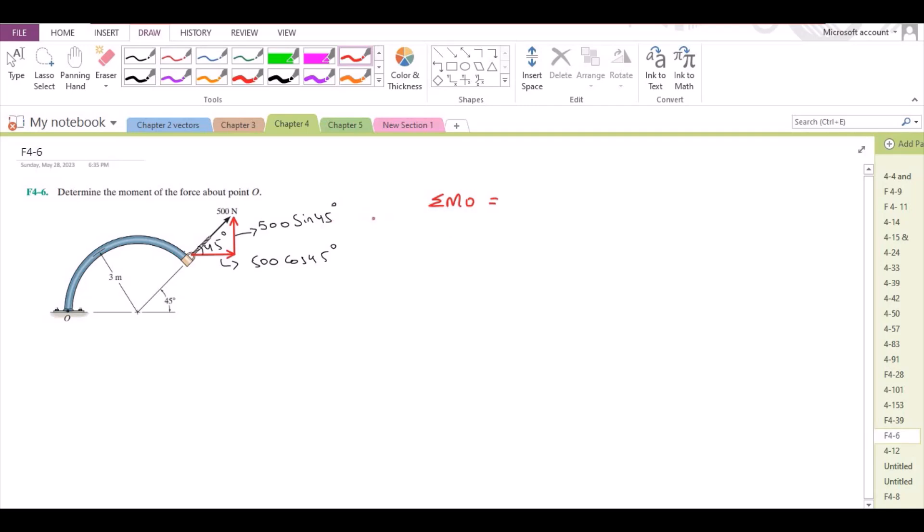Let us begin with the vertical force component. I can draw its projection right here. This is also 500sin45. This vertical force component is trying to rotate the assembly in counterclockwise direction above point O, so it would be taken as positive.